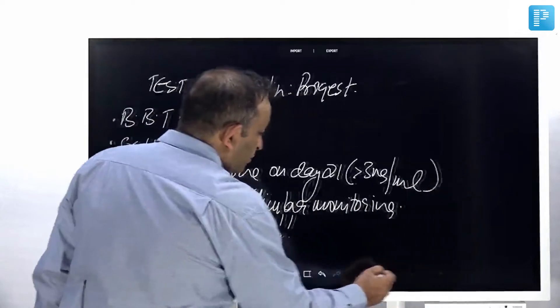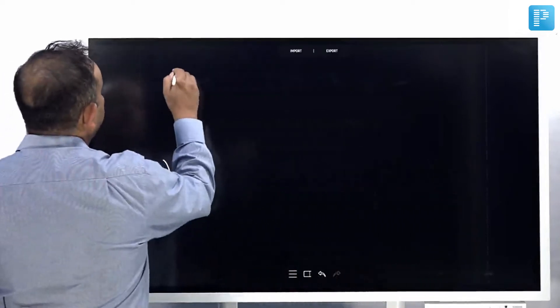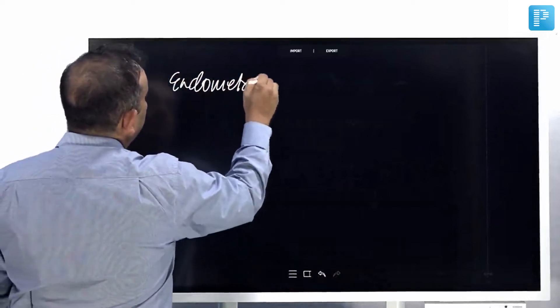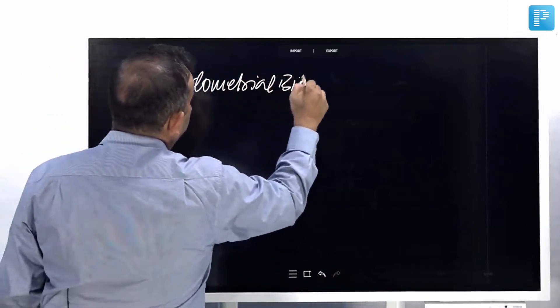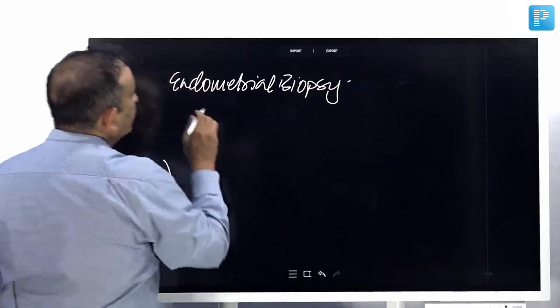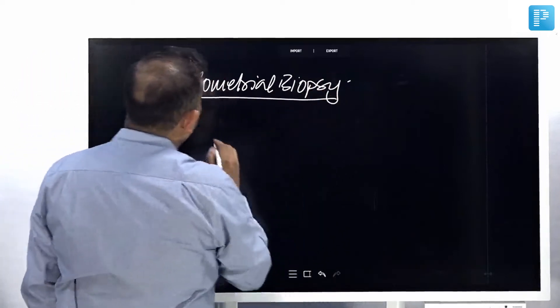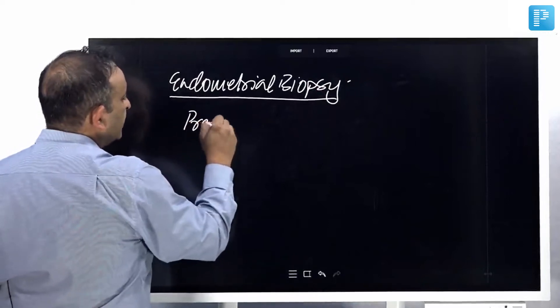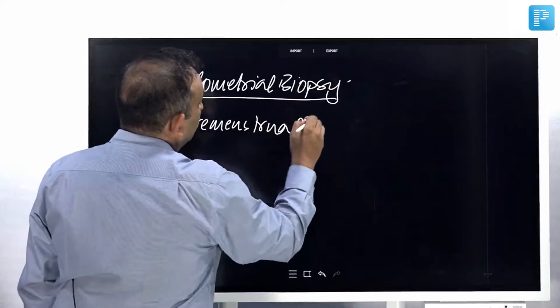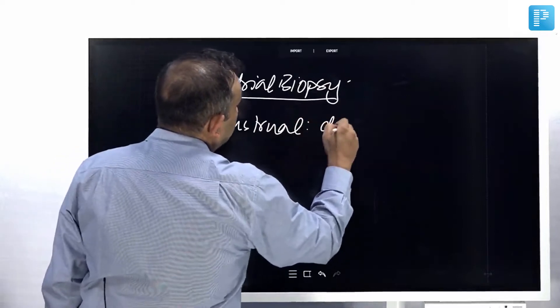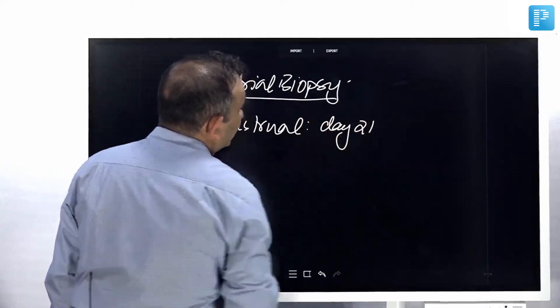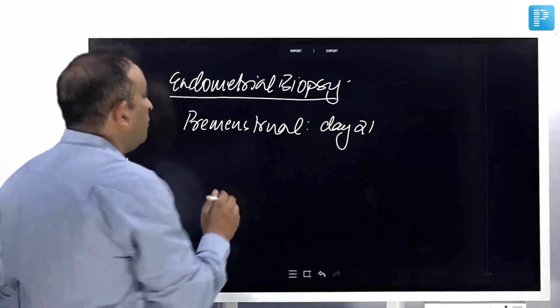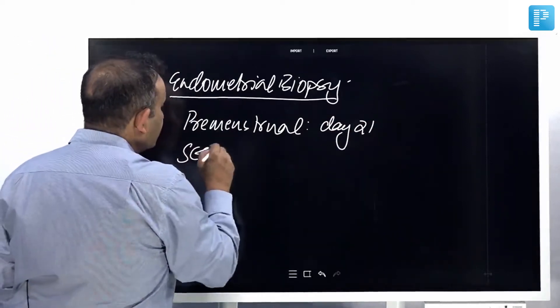You can also test for ovulation by endometrial biopsy. This premenstrual endometrial biopsy is done around day 21. What do I want to see in the endometrial biopsy? I want to see the secretory changes.